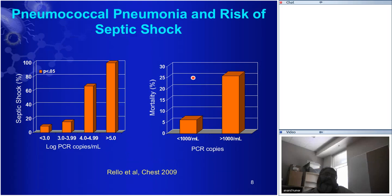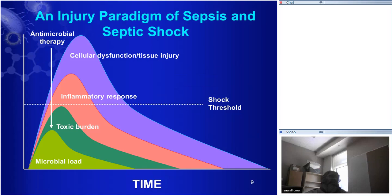When we give antimicrobial therapy, the patient is already in shock, the microbial load decreases over time — not instantaneously. The toxic burden follows, the inflammatory response follows, and cellular dysfunction and tissue injury settle down. What we're hoping is that by eliminating the microbial load, we decrease the time above the shock threshold to a short enough period that you haven't passed the golden hour and have a shot at making it.